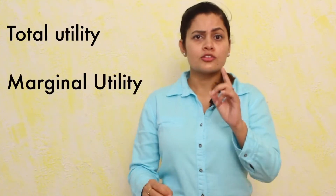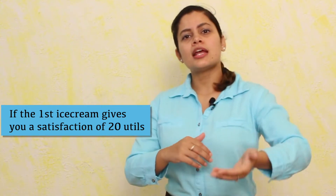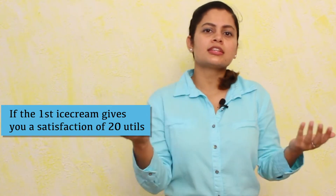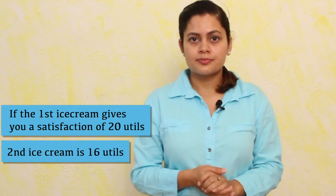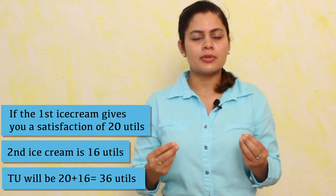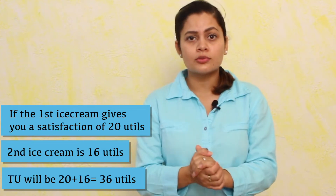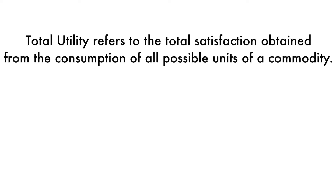The next concepts we need to understand are Total Utility and Marginal Utility. What is Total Utility? If you consume ice cream and you assign 20 utils to the first unit, and then consume another and assign 16 utils, the sum — 20 plus 16 equals 36 — is your total utility. If you consume more units, you keep adding the utility. Total utility refers to the total satisfaction obtained from the consumption of all possible units of a commodity.